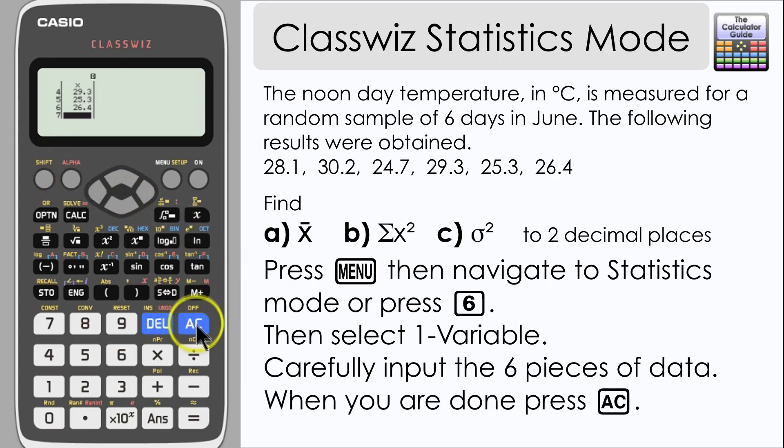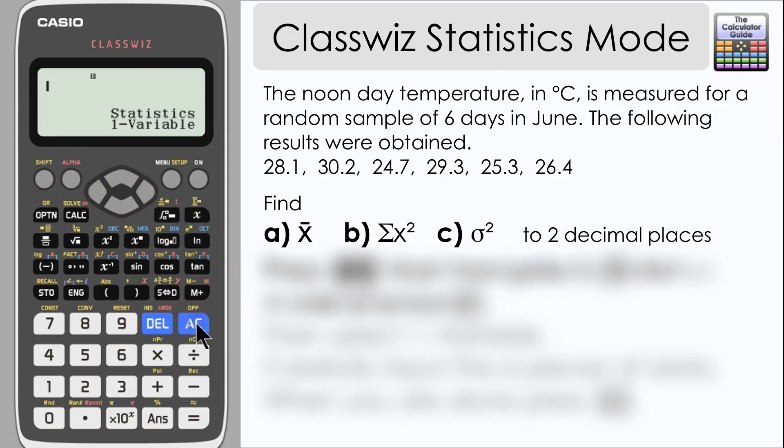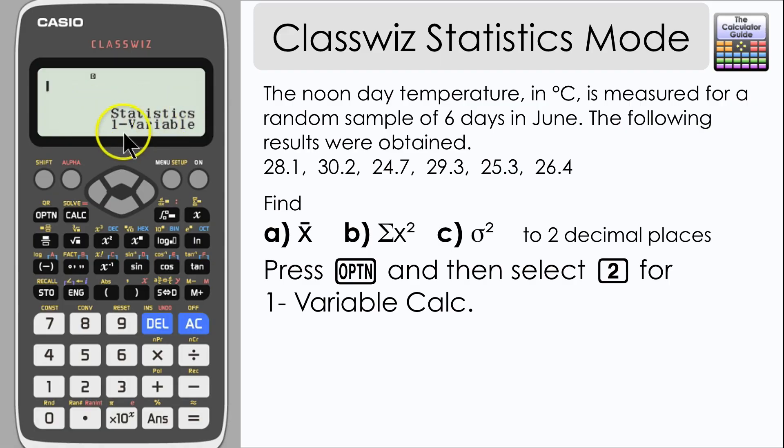Once you've inputted the data, press AC. You should have statistics one variable displayed. And then you need to press option. We're going to press 2 for one variable calc.